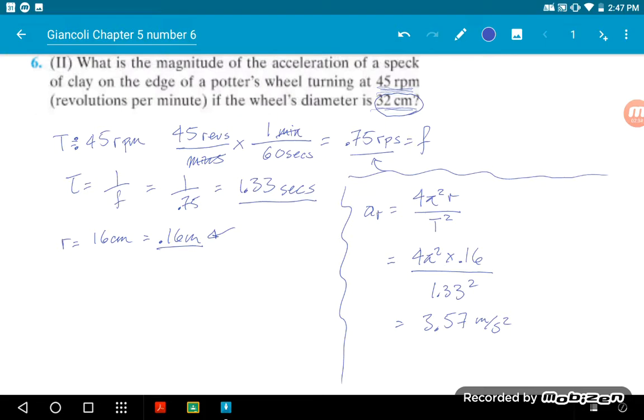So again, the trick with this problem is, number one, you should know that revolutions per minute is not a period, it's a frequency. And all you've got to do is do the inverse of that and convert it into seconds. And then know that a diameter is not r, r is half of that, and make sure that the unit is in meters. Thank you very much for watching.